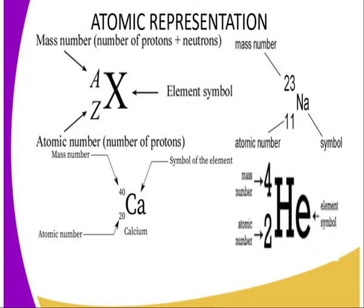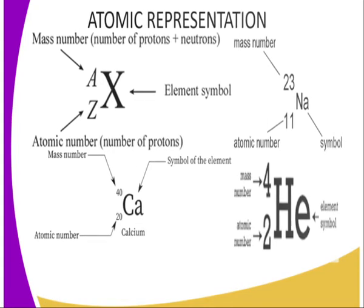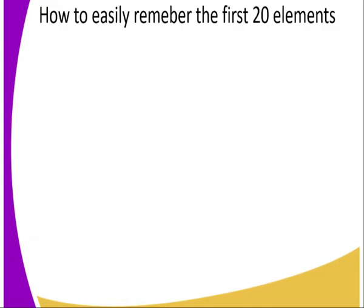Another example is helium, whose symbol is He, with atomic number 2. You can see the 2 placed as the subscript. Its mass number is 4 — two protons plus two neutrons — giving us 4. You can try writing the symbol notation for other given elements.